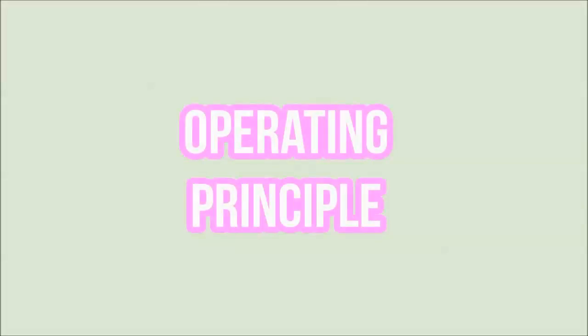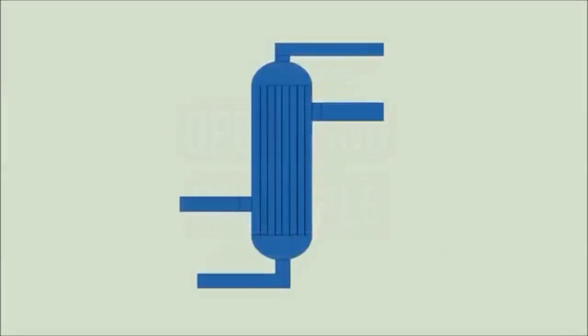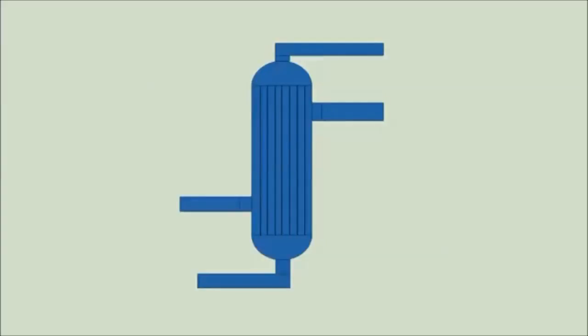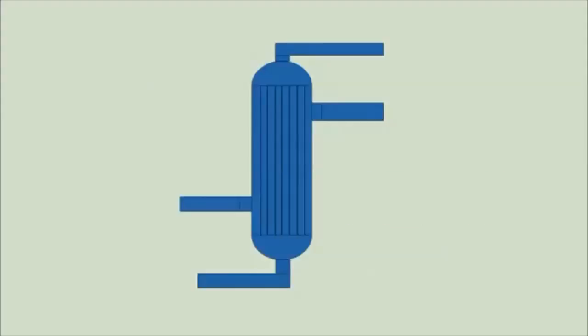So now, let's see the operating principle of the reactor. As you can see, this is the overview of the reactor. It has two inlets: one for methane and steam, and the other one for dowtherm A. The reactor also has two outlets.